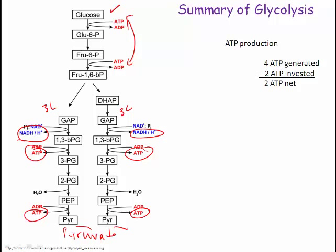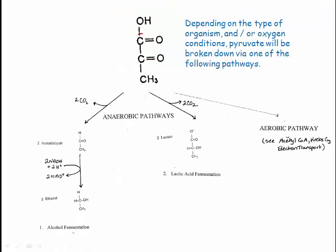In this video, we want to take a look at some of the fates of pyruvate. Here's our pyruvate molecule. You can see that it still has three carbons and a fair amount of bond energy left. Three different things can happen to it. There are two anaerobic pathways and one aerobic pathway. In this video, we'll just take a look at the anaerobic pathways, and we'll save the aerobic pathway for the next video.